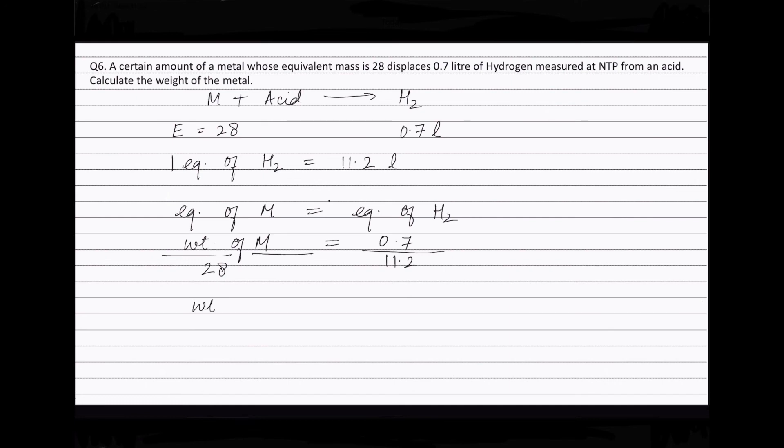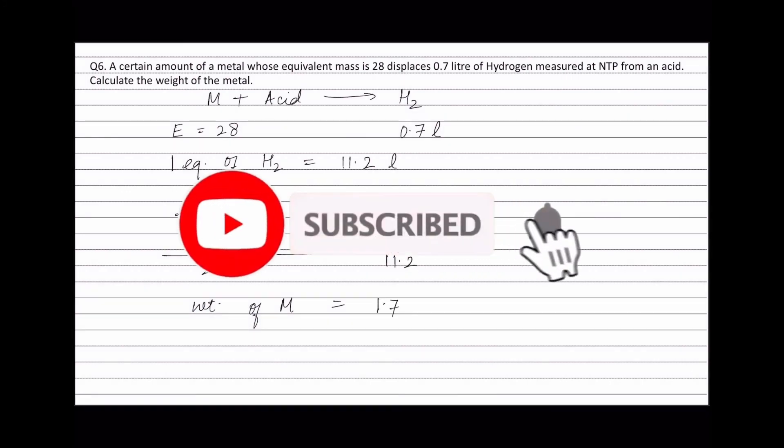the weight of metal equals to 1.75 gram.